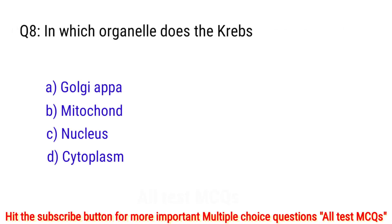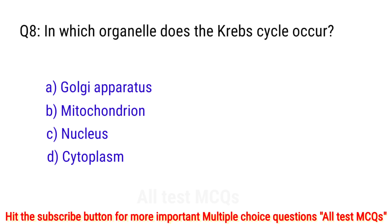Question number 8. In which organelle does the Krebs cycle occur? The right answer is option B: mitochondria.